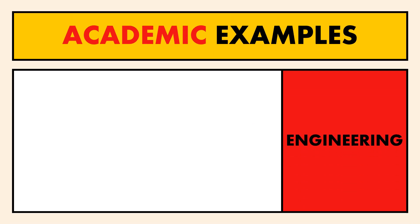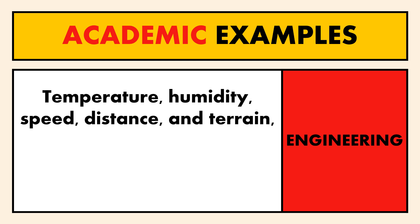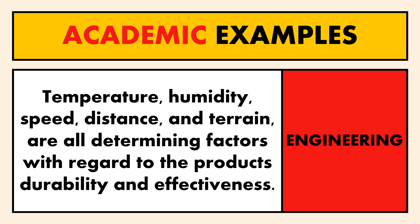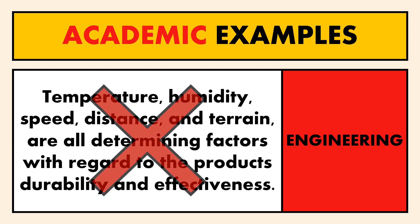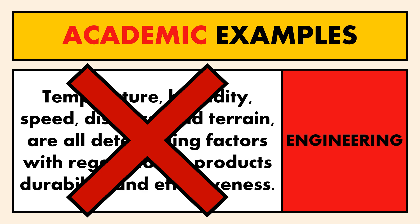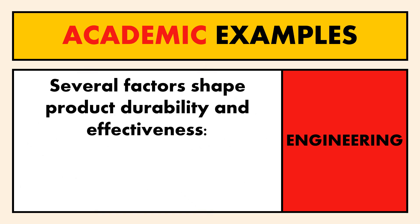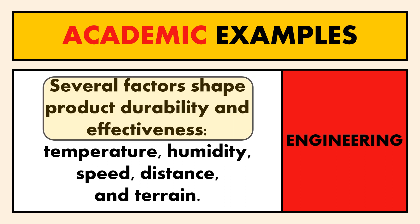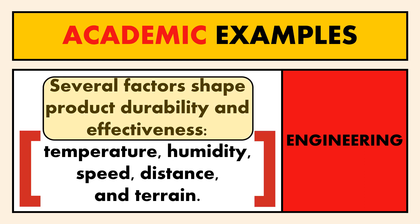Let's take a look at how this works in an academic context, assuming you're an engineering student. 'Temperature, humidity, speed, distance, and terrain are all determining factors with regard to the product's durability and effectiveness.' Again, we don't want to give the reader that much information to start with. Instead, we create the framework first: 'Several factors shape product durability and effectiveness.' The reader now has the context to understand the list of items that follows, fitting everything into that figurative grocery cart.